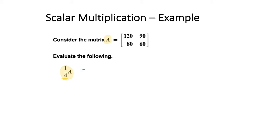Looking at what that will look like, we will have a new matrix. It will have the same order, so two by two - two rows and two columns - and each number will be multiplied by one quarter.